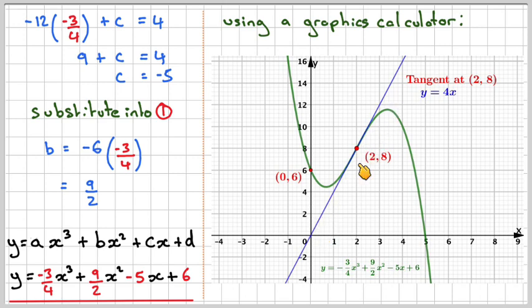The gradient of the tangent is 4x at that point, meaning the gradient is 4. The tangent crosses from one side to the other because this is a non-stationary point of inflection, which follows the second derivative being 0 at that point.